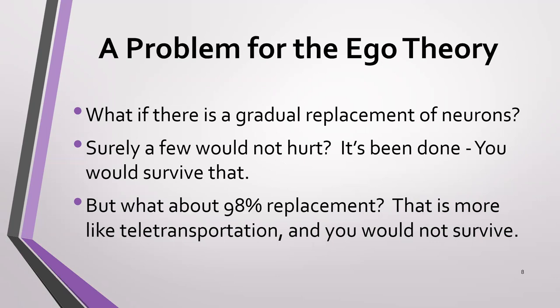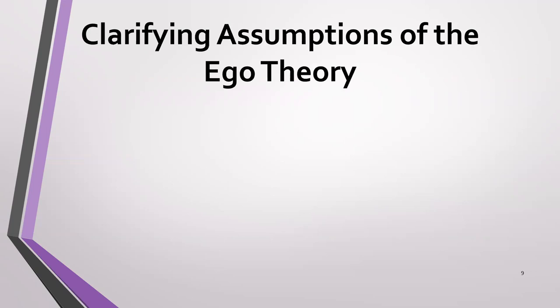Now there is a problem for the ego theory: what if there's a gradual replacement of the neurons? Surely a few wouldn't hurt. If you're only replacing a few neurons, it seems like you would survive that. But if you're going to have 98% of your neurons replaced, it seems like you would not survive — that's a lot more similar to teletransportation. And if you conclude you don't survive teletransportation, then it seems obvious you wouldn't survive 98% replacement either.